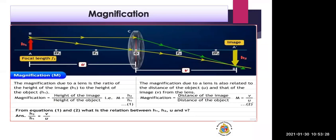If the problem asks for magnification and the heights H1 and H2 are given, use equation 1: m equals H2 upon H1. Equation 2 is m equals V upon U. When we compare both equations, magnification equals magnification in both cases, so H2 upon H1 equals V upon U.